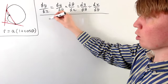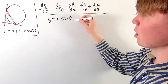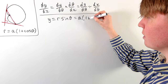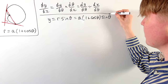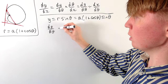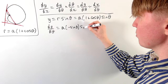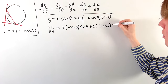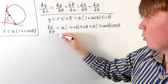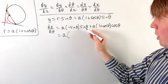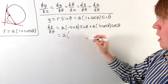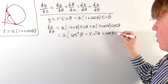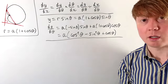Starting with dy/dθ: since y equals r sin θ and r equals A(1 + cos θ), we get y equals A(1 + cos θ) sin θ. Differentiating with the product rule gives dy/dθ equals A times [−sin θ · sin θ + (1 + cos θ) · cos θ]. Factoring out A, we get A times [cos²θ − sin²θ + cos θ], which is a nice expression for dy/dθ.